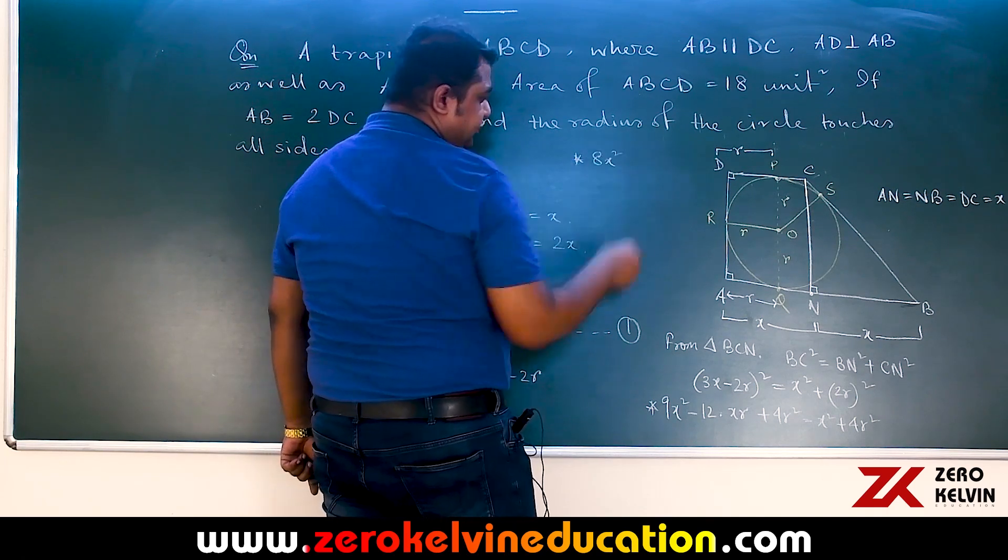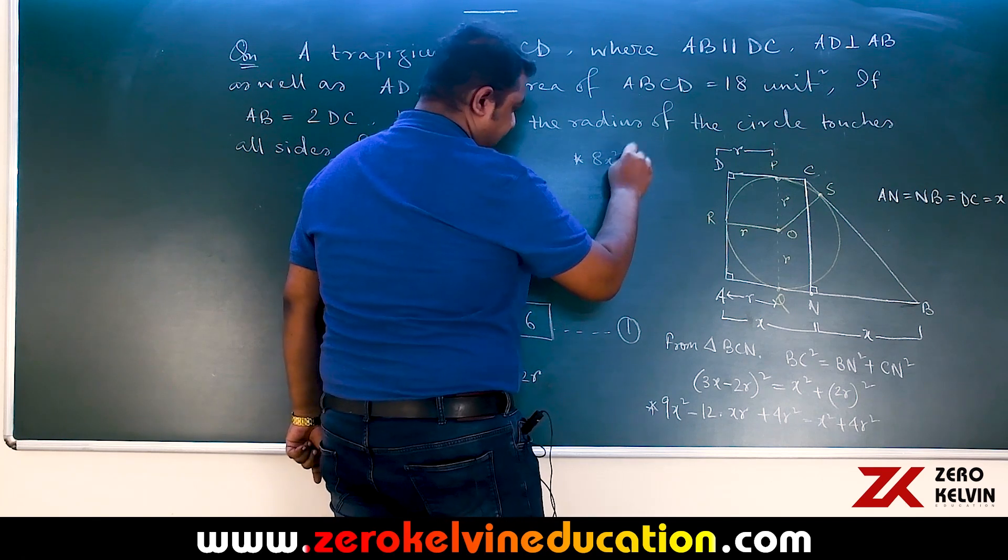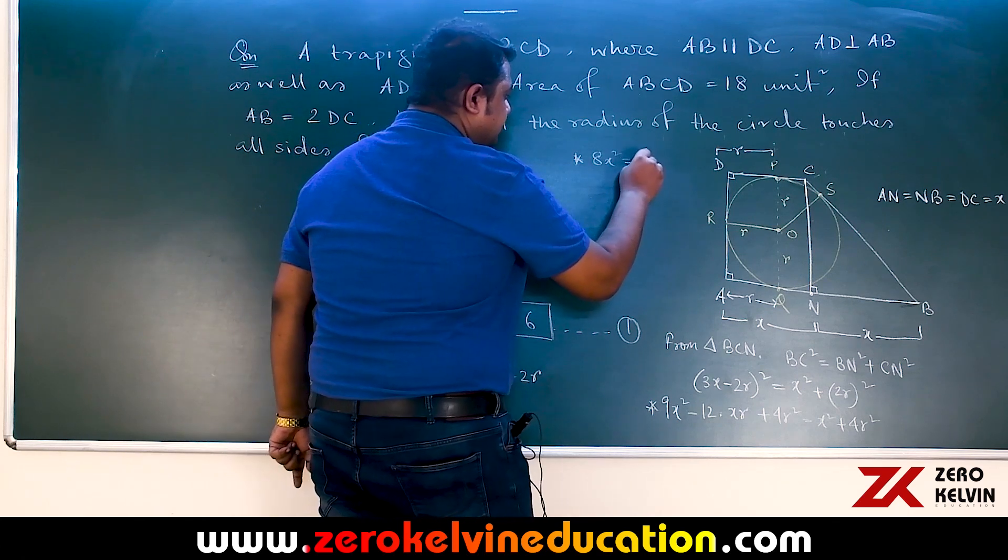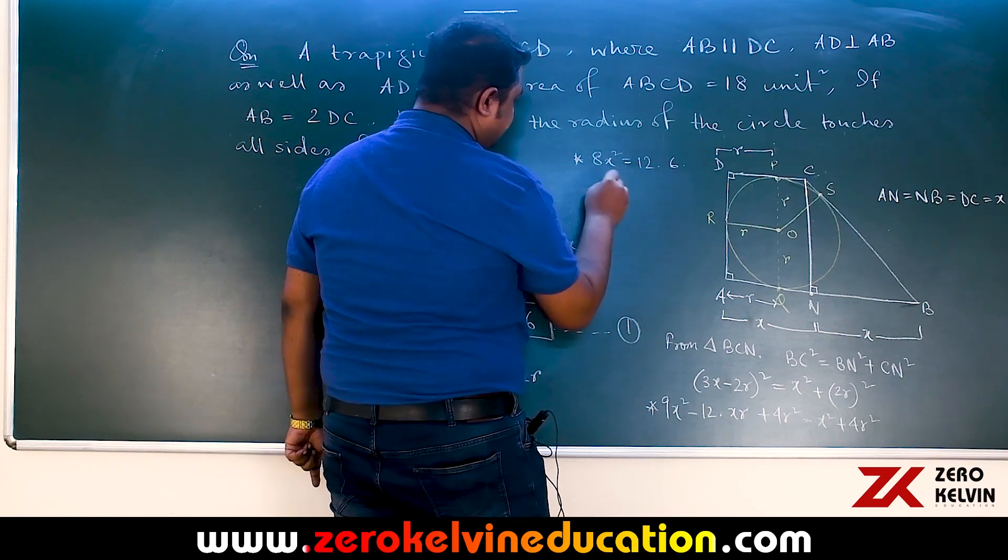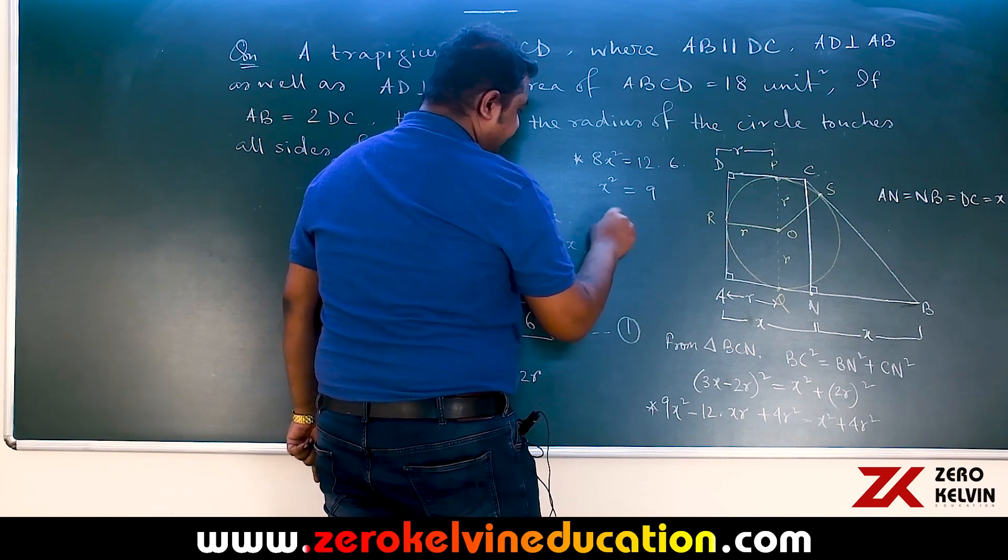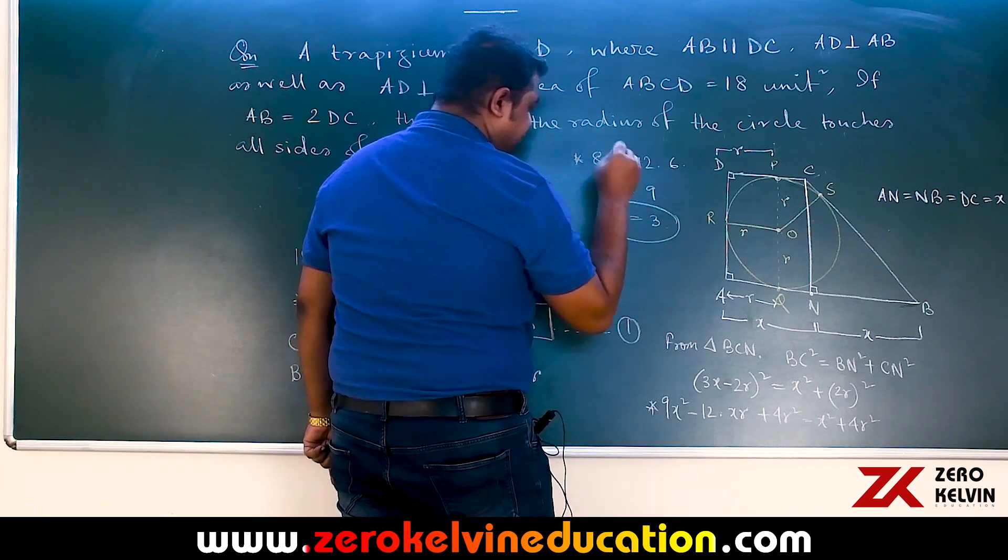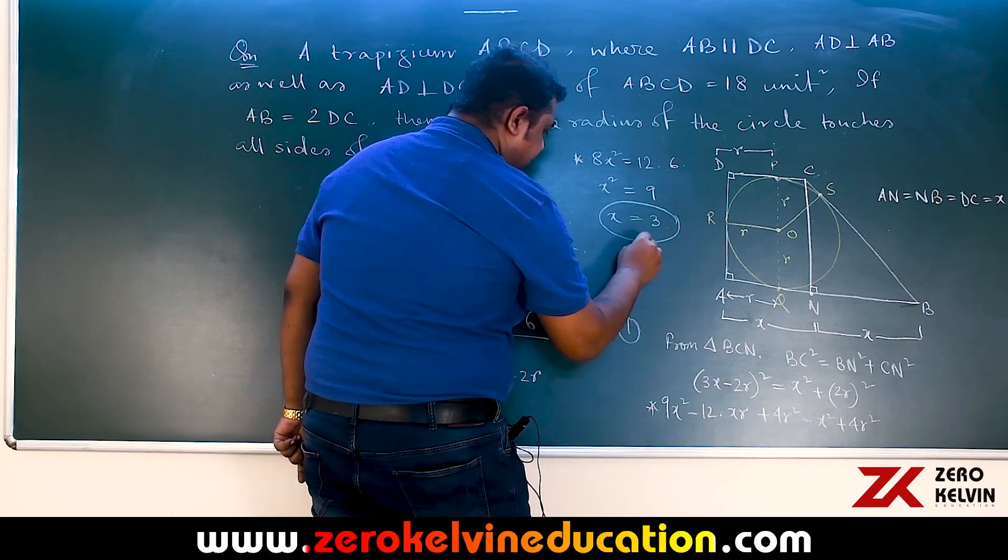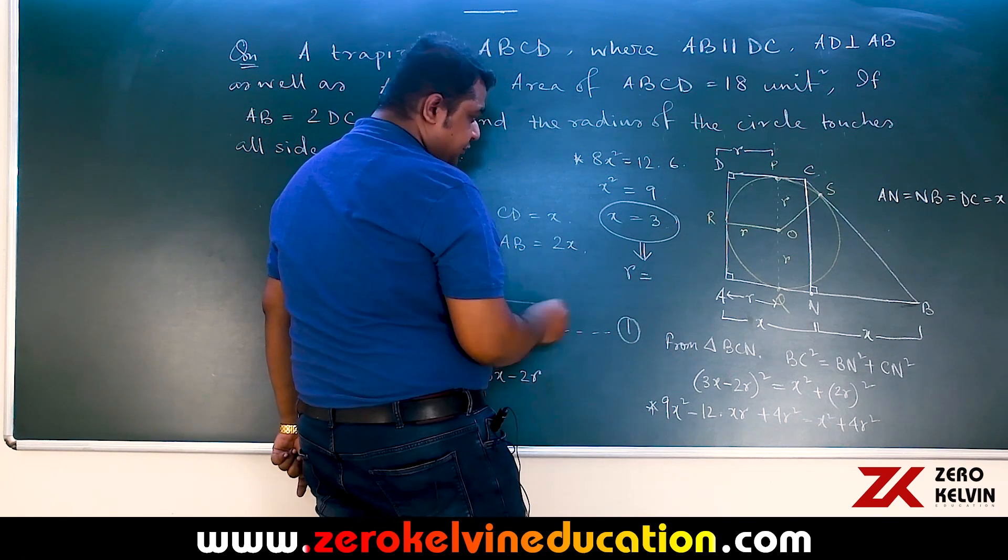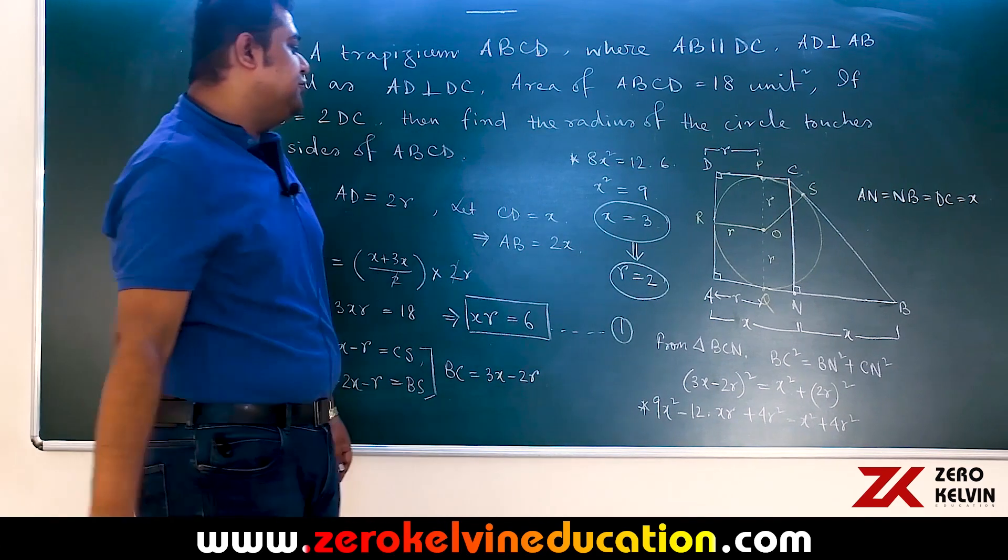8x square that has appeared as 12 times xR. xR was 6, so 12 into 6 and x square itself as 9. x being side length considered to be positive, so x is found to be 3 and which obviously concludes from xR equals 6 that our required radius has to be 2 units.